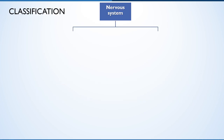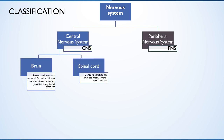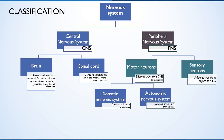Our nervous system is composed of two main divisions: the central nervous system of the brain and spinal cord, and the peripheral nervous system. The peripheral nervous system consists of sensory and motor neurons carrying impulses from the periphery to the brain and from the brain to effector organs respectively. On the basis of body parts response, the peripheral nervous system is subdivided into somatic nervous system and autonomic nervous system.